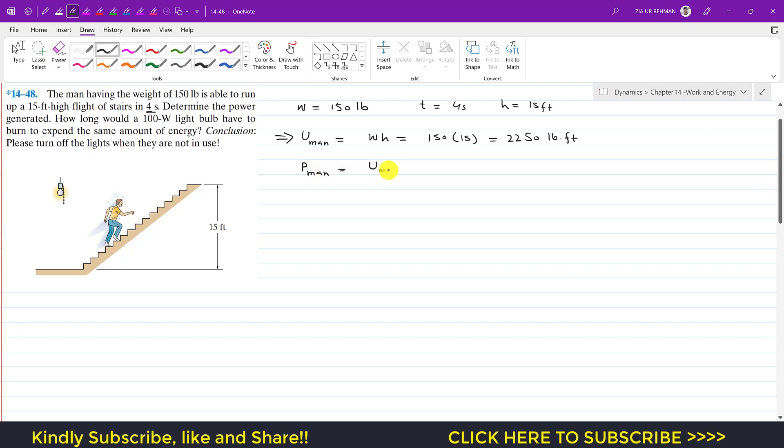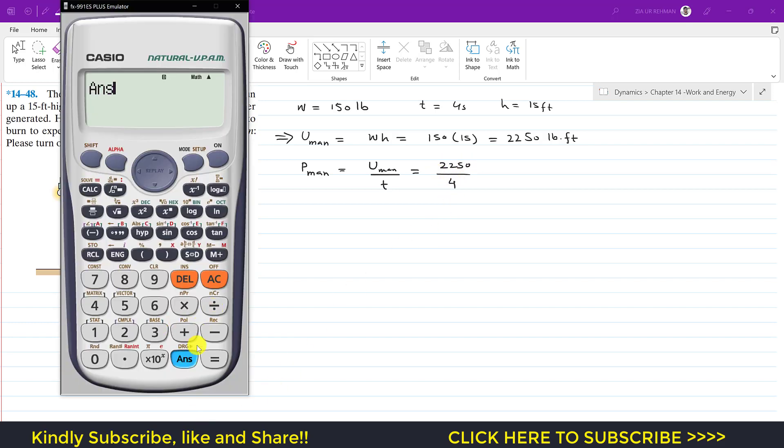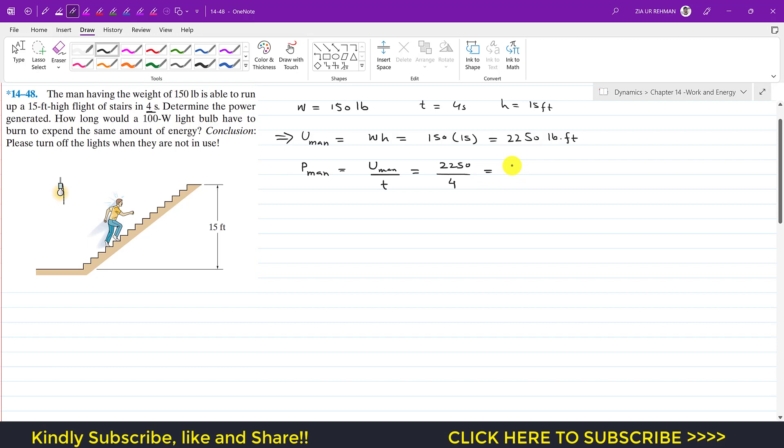...the time that he takes to cover that 15 feet distance in the vertical direction. So that is u of man is 2250 and time taken is four seconds, so this is 2250 divided by 4. This gives us 562.5 pound-feet per second.